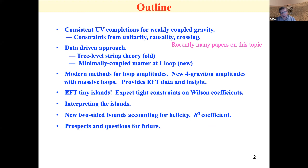By data, I mean something very simple. You pick a consistent UV completion of some kind and then you look at the coefficients. People have been doing this from string theory from the beginning of time, because if you get some kind of bound, you just might want to ask where do your theories lie — do they even satisfy the bounds? That may be a way of checking your bounds.